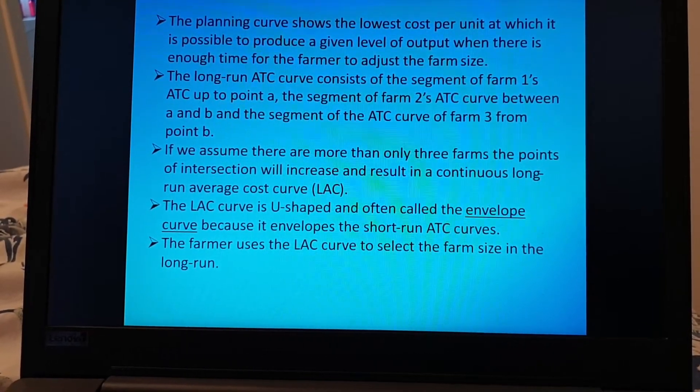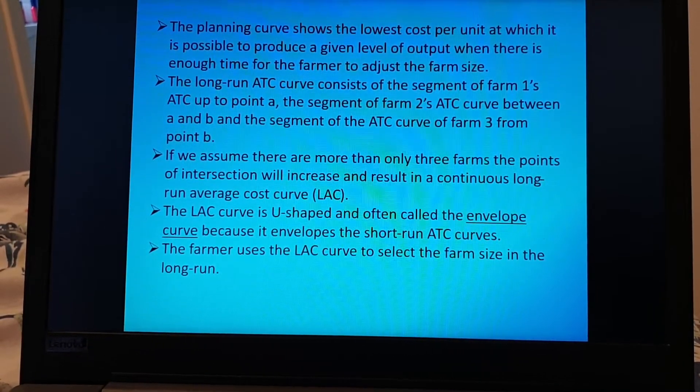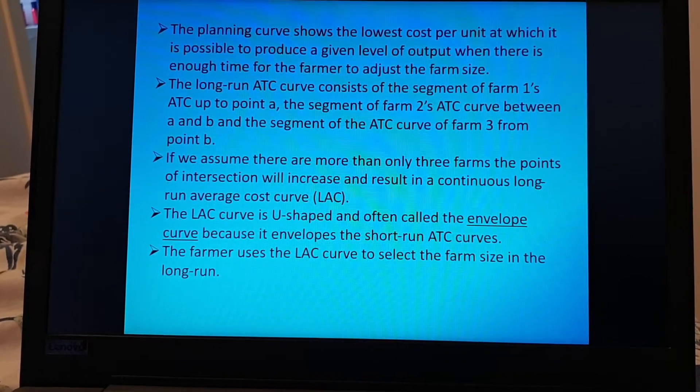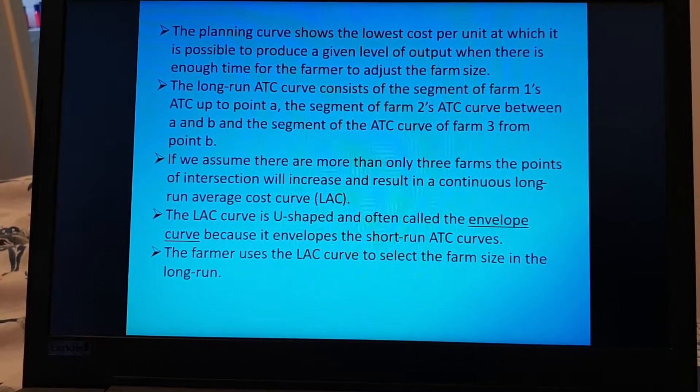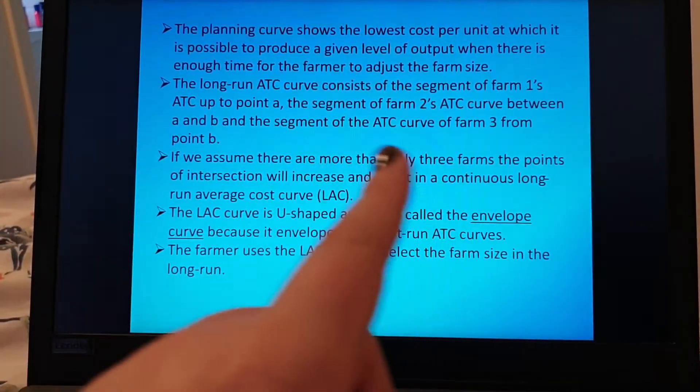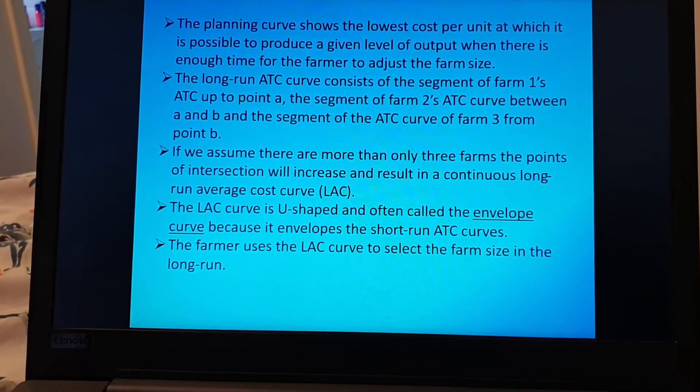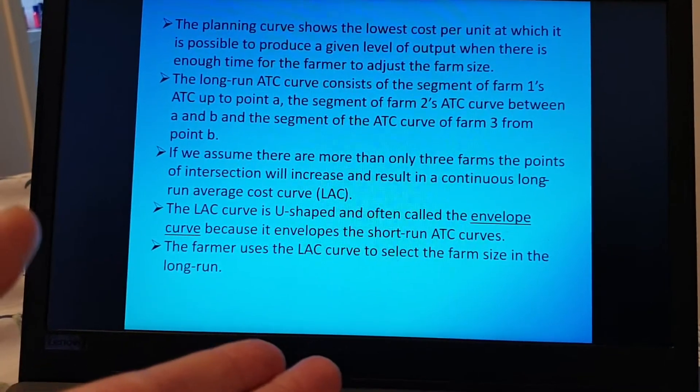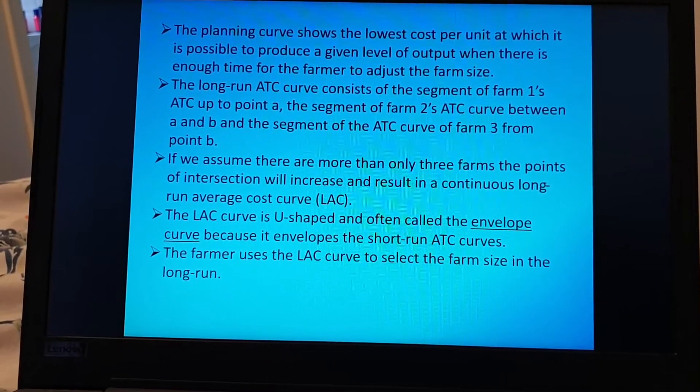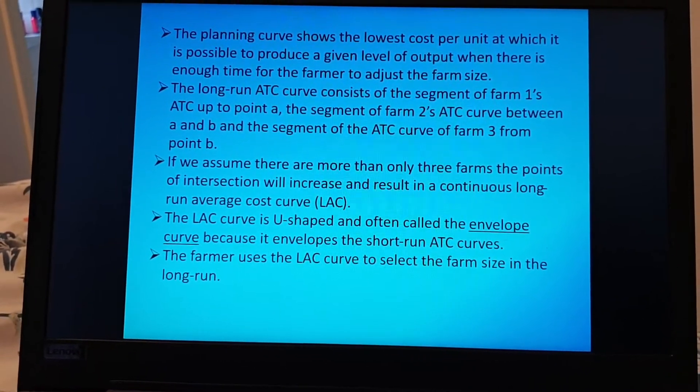If we assume there are more than only 3 farms the point of intersection will increase and result in a continuous long run average cost curve LAC. So it will just be a longer curve. So that curve is known as my planning curve so that I can plan which farm I would use to produce on.